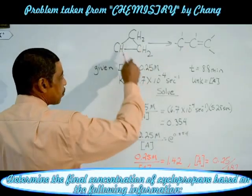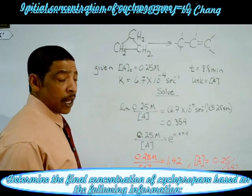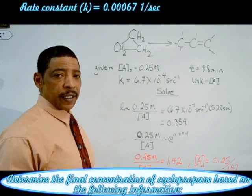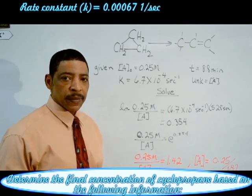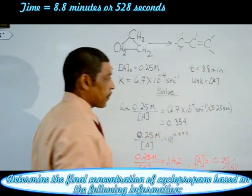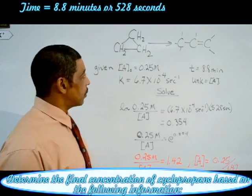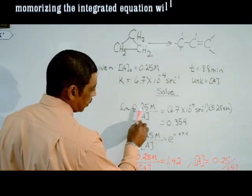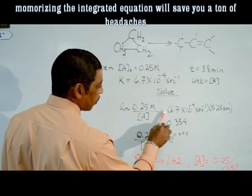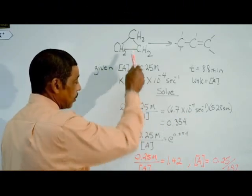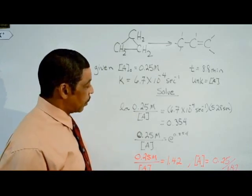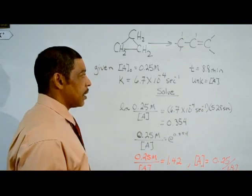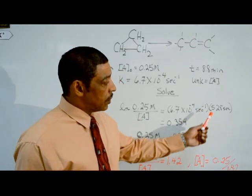Consider the following practice problem, where the initial concentration of cyclopropane, which represents A, is equal to 0.25 molar. The value of K, or the rate constant, is given as 6.7 × 10⁻⁴ reciprocal seconds. The time is 8.8 minutes, and we are trying to determine the final concentration of cyclopropane. From the previous information we know that the natural log of the initial concentration of A divided by the final concentration of A is equal to KT. The initial concentration of cyclopropane is 0.25 molar, K is 6.7 × 10⁻⁴ s⁻¹, and the time of 8.8 minutes represents 528 seconds.